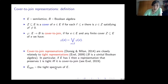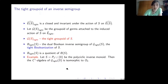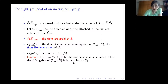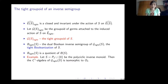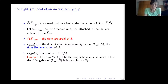Cover-to-join representations are closely related to tight representations and in many important cases they are the same — there is a paper by Exel discussing this relationship. By E^cap_tight we denote the tight spectrum of E, the space of all tight characters of E. The dual Boolean inverse semigroup is called the tight Booleanization of S. The C*-algebra constructed from the tight groupoid is isomorphic to the Cuntz algebra O₂. Very many examples of C*-algebras and groupoid C*-algebras in the literature arise from Booleanizations or tight Booleanizations of inverse semigroups.